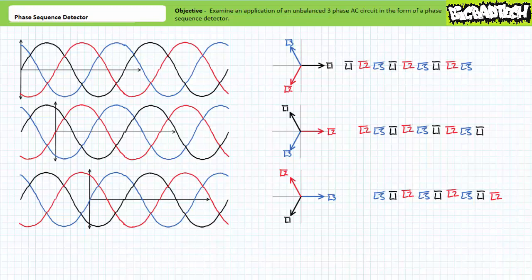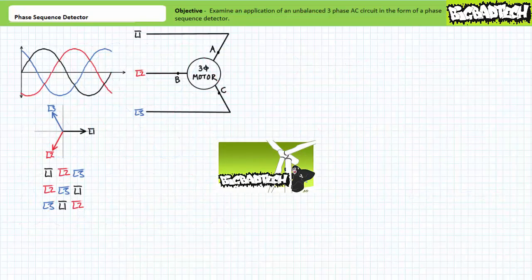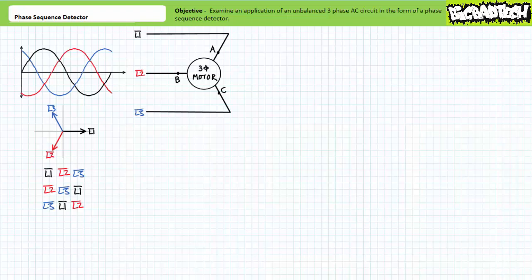This being said, at the point of use, a technician can apply the different phases in whatever manner they deem suitable for the application in question. As detailed in the rotating magnetic field lecture available at the Big Bad Tech channel, three-phase AC establishes a rotating magnetic field in the stator, which the rotor follows at an established rotational speed and torque. Consider a three-phase AC motor wired in the following fashion: phase L1 is landed at terminal A, phase L2 is landed at terminal B, and phase L3 is landed at terminal C.